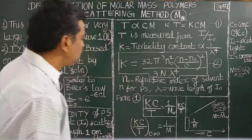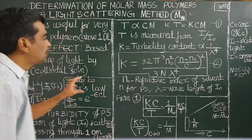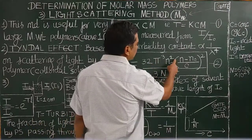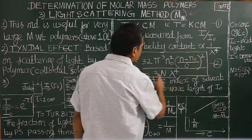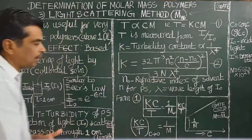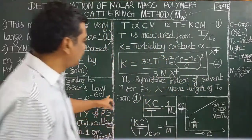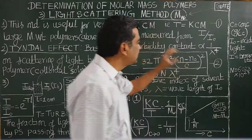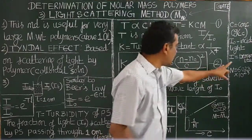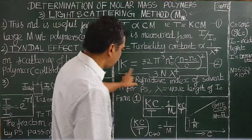A formula is derived to calculate the turbidity constant K. The equation is: K = 32π²n₀²(dn/dc)² / (3Nₐλ⁴), where n₀ is the refractive index of the solvent measured by a refractometer, N is Avogadro's number (6.023 × 10²³), and λ is the wavelength of incident light. K can be calculated from this expression.